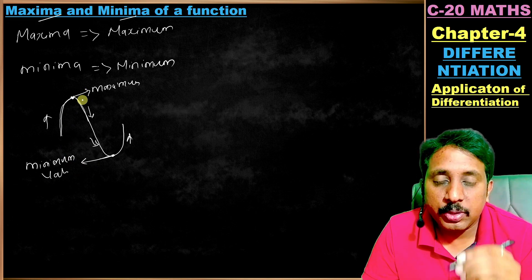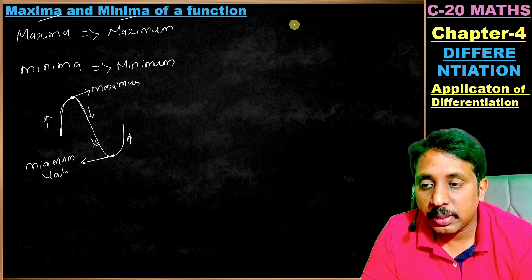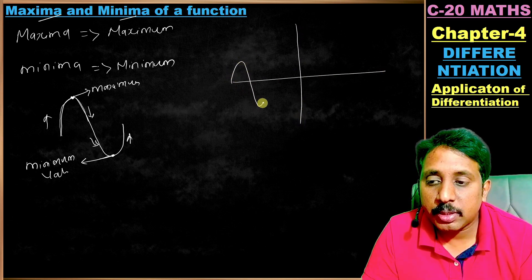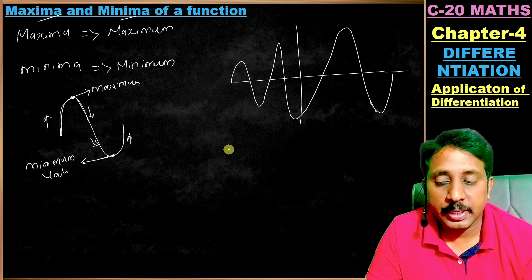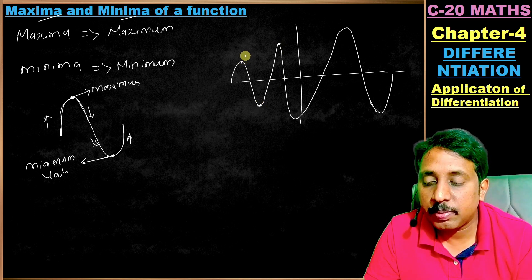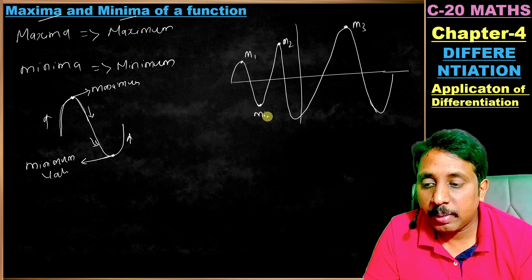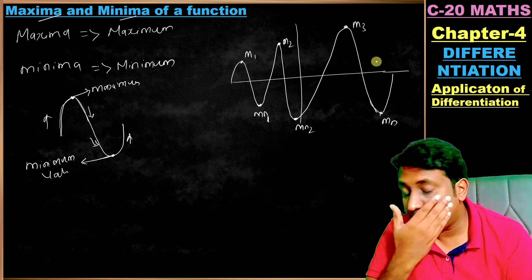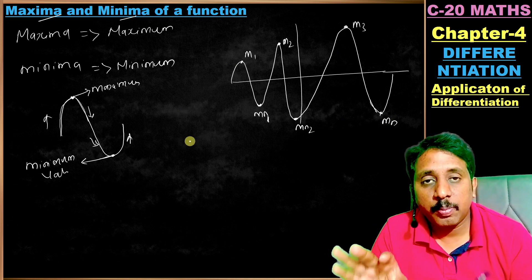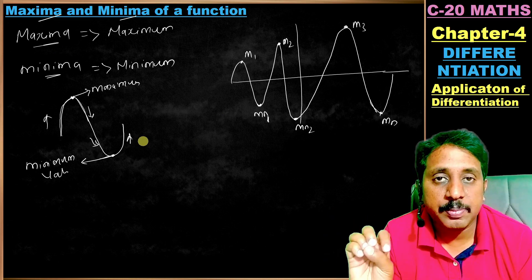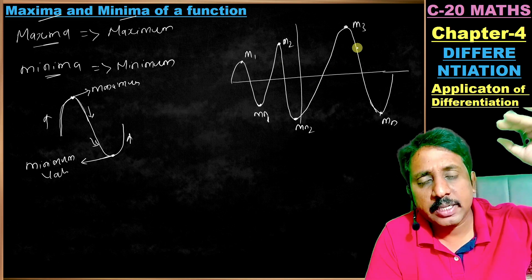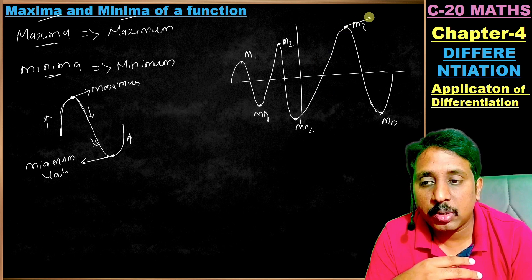One value is minimum and one value is maximum — those are singular forms. If you take a function on a scale, it can have multiple maxima and minima. For example, m1, m2, m3 are maximum points and mn1, mn2, mn3 are minimum points. So the function can have more than one maximum and minimum.